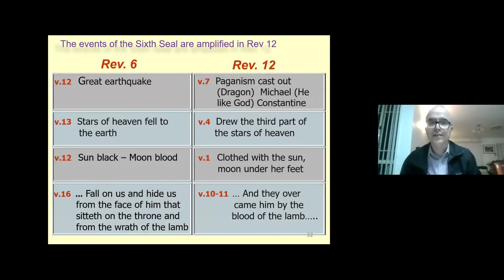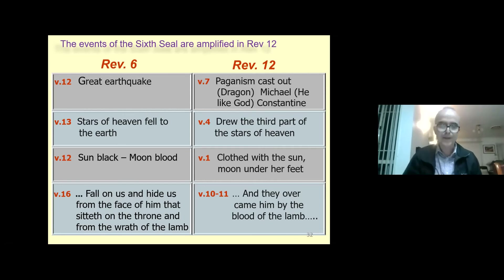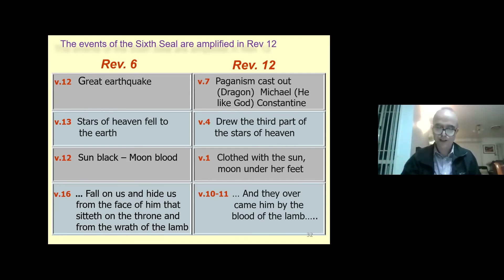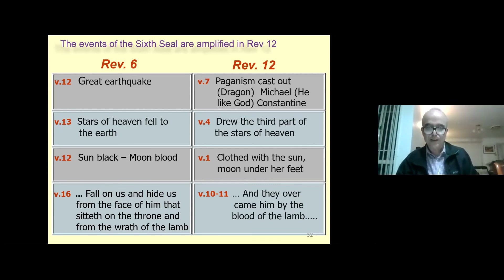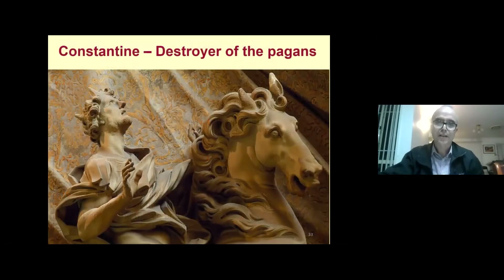The events of the sixth seal are amplified in Revelation 12. Revelation 6 describes the sun going black, the moon turning to blood, the stars falling from heaven — the pagan Roman Empire suffered; its pagan leaders, religious leaders, and administration were defeated and cast down. Running in parallel, Revelation 12 tells about the birth of false Christianity with a counterfeit Christ, a counterfeit king, a counterfeit religion, and a counterfeit kingdom of God. That's the subject of another class.